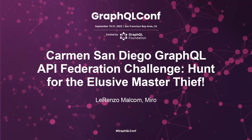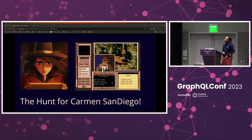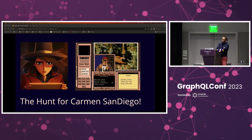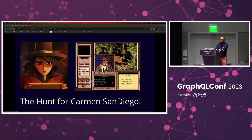Thank you for coming to my talk. This is the Hunt for Carmen Sandiego. Hopefully this will be a fun introduction and a kind of game into some of the tools around GraphQL, like GraphQL Mesh, and doing a little bit of things like Federation if we have some extra time. We'll be doing some schema stitching, some Federation. But mostly it's going to be a fun game, and it'll just give us something fun to do in the morning.